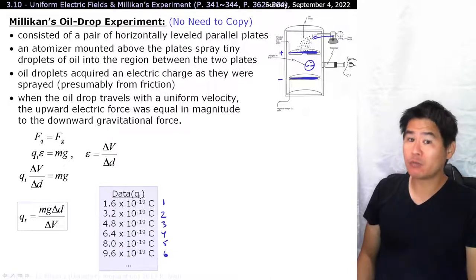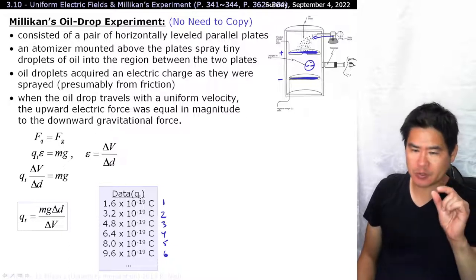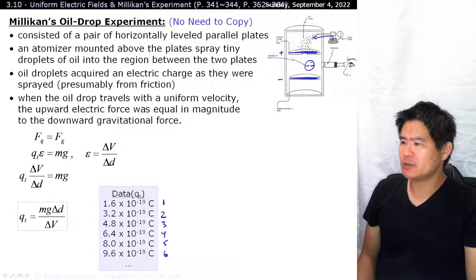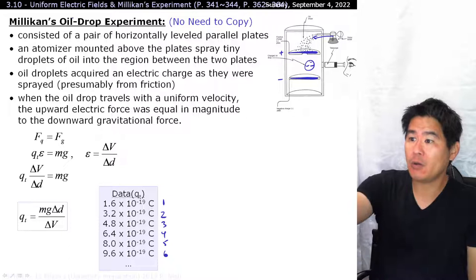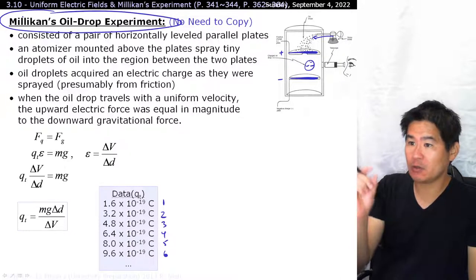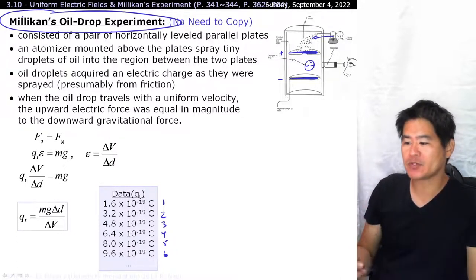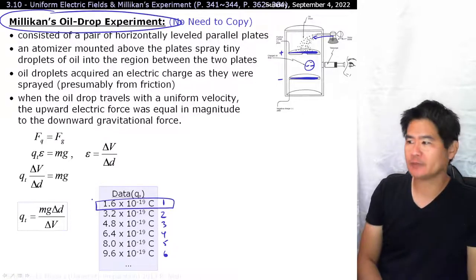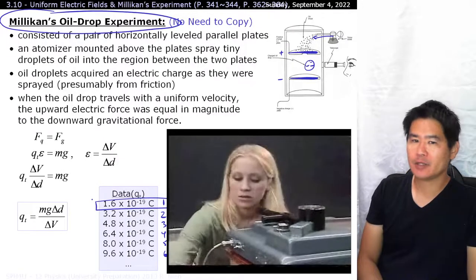Now, as an original experiment, he used water as his droplets, but as you may know, water evaporates very easily. And then the droplets get smaller and smaller, and his answers were all thrown off. So later on, he realized that I shouldn't be using water droplets. I should be using oil drops. And that's why this experiment is now famously known as Millikan's oil drop experiment, because he used these tiny little oil droplets, and was able to slowly reverse calculate and figure out the charge of an electron.